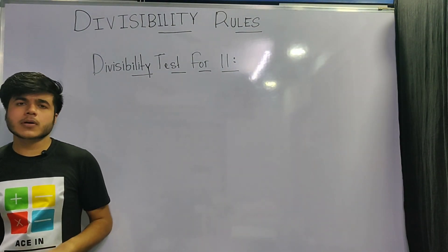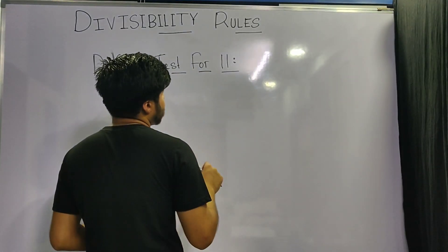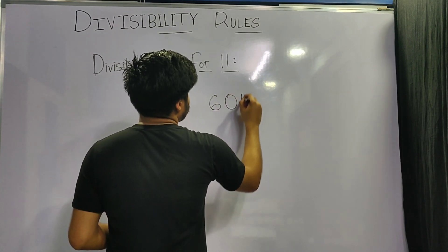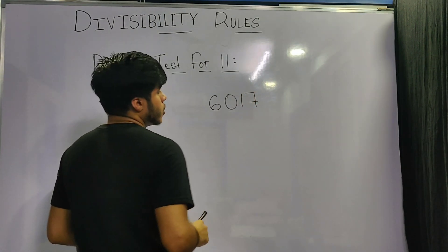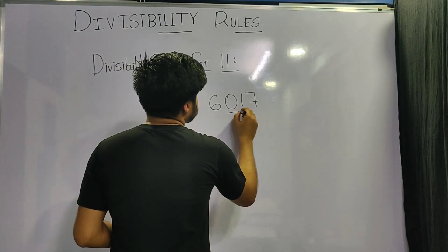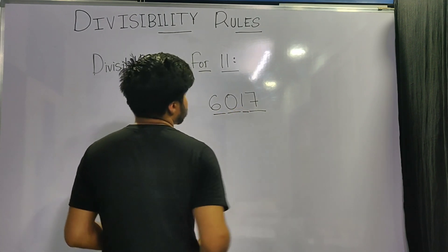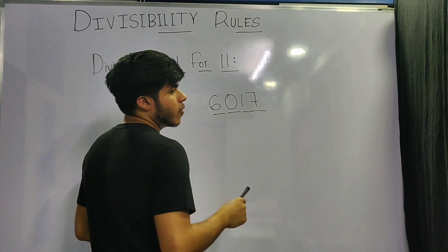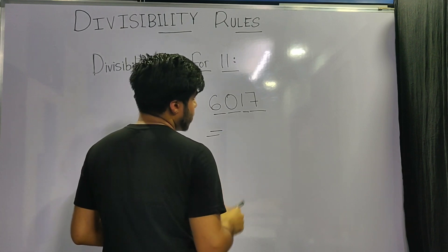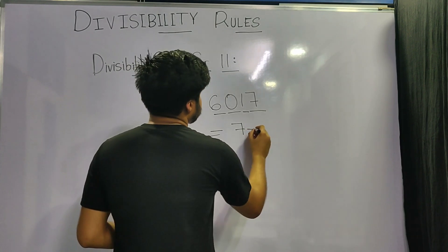Moving on to the number 11 — the rule is a bit tricky, so pay close attention. For a given number, check whether the sum of its digits at the even places minus the sum of its digits at the odd places equals 0 or is a multiple of 11. For example, take 6017: the sum of digits at even places is 7, and the sum at odd places is also 7, so the difference is 0 — the number is divisible by 11.